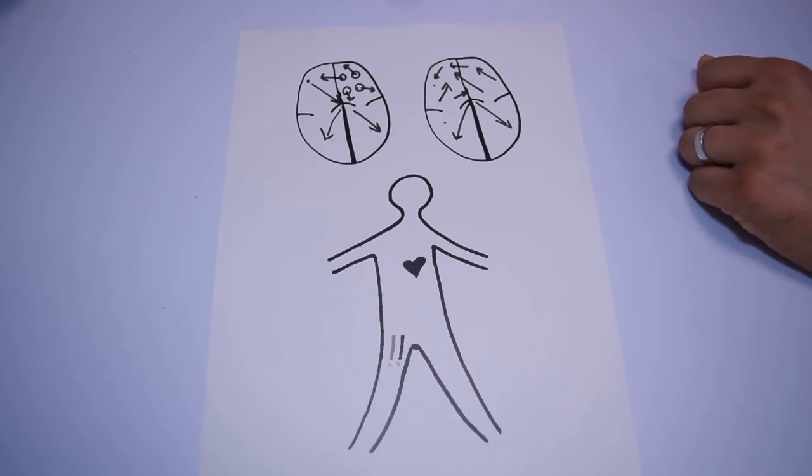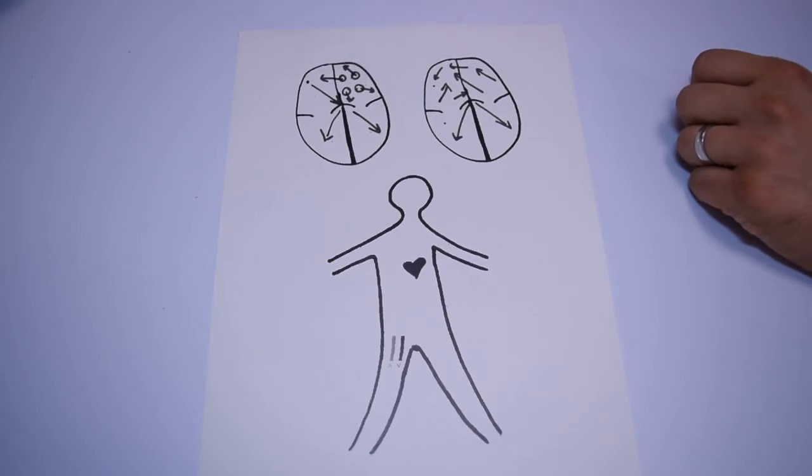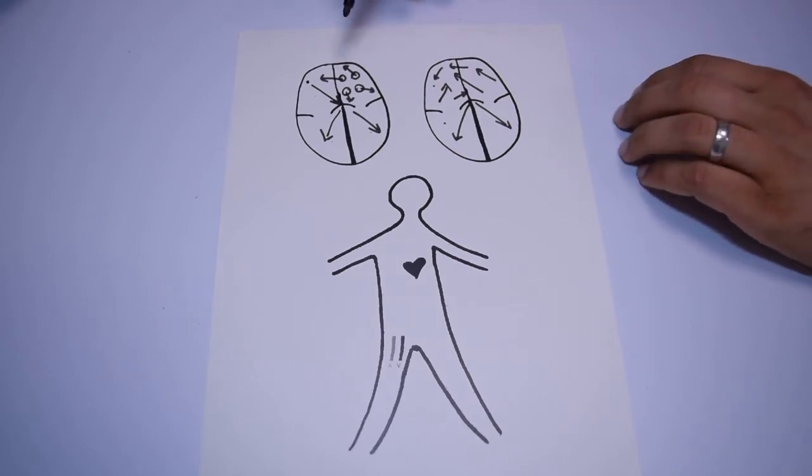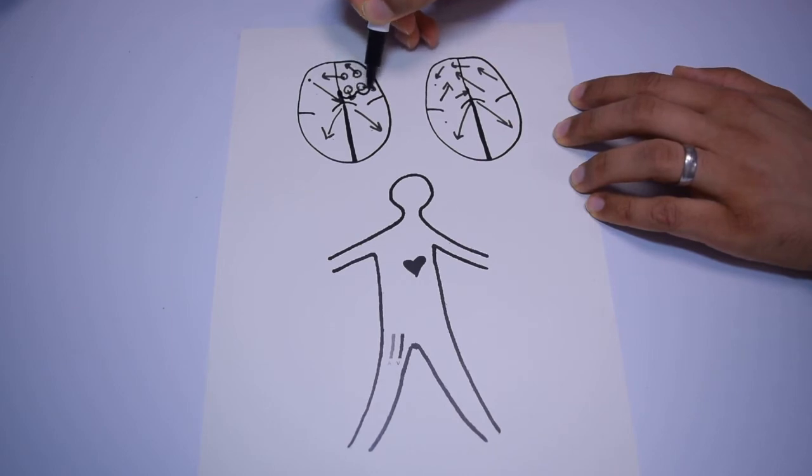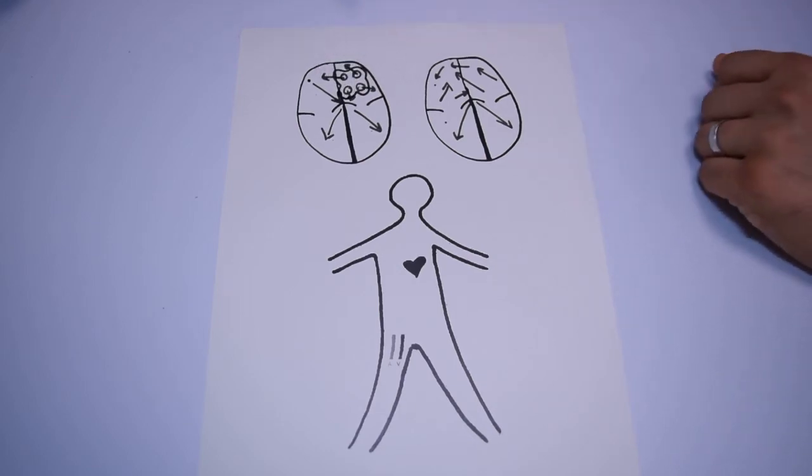You have been referred for an ablation procedure for this condition. Ablation attempts to stop these firings coming from these four veins. It tries to do this by either burning or freezing around these four veins to then isolate these signals coming out to the rest of the heart.